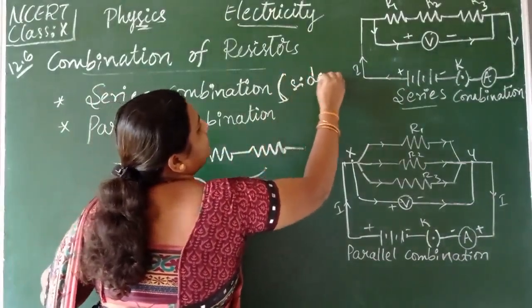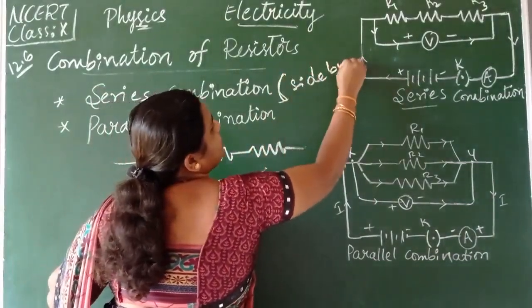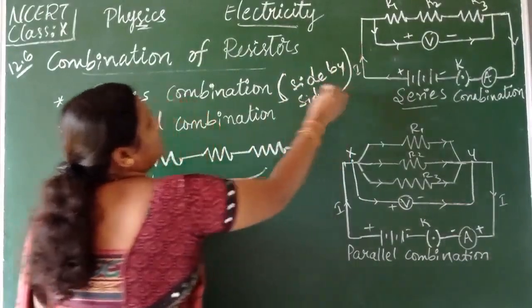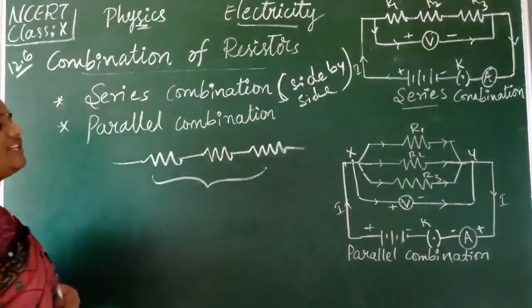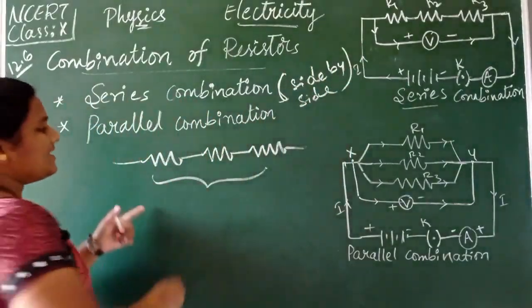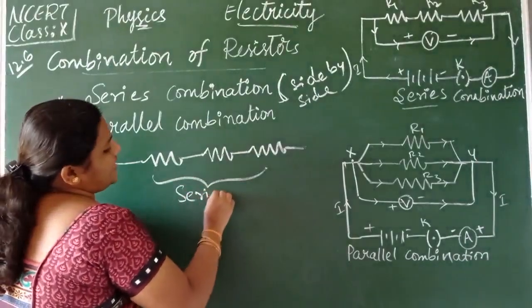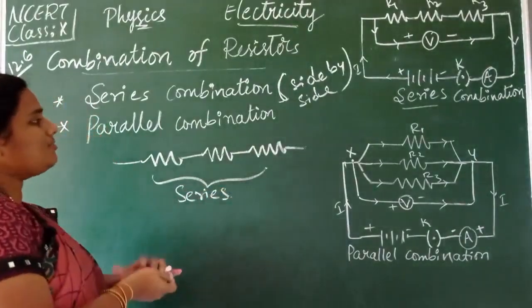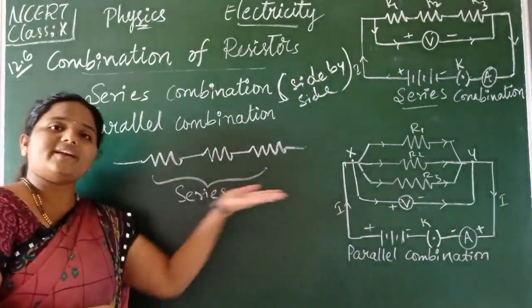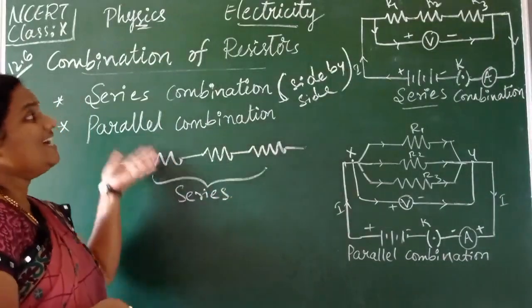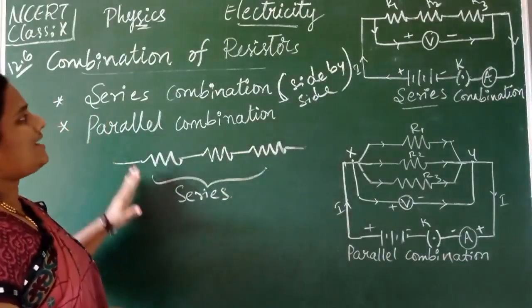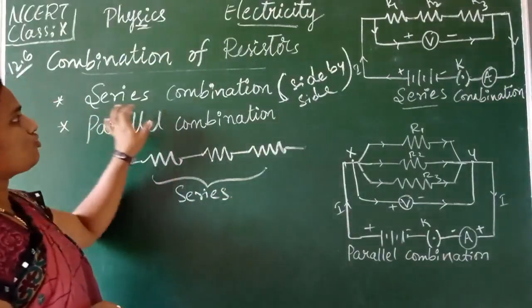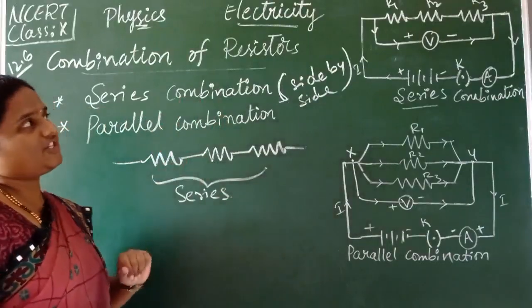Side by side is called series. Such a combination — where resistors form a horizontal line — is called a series combination.